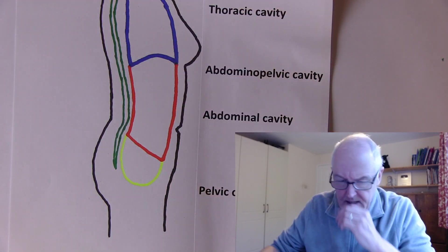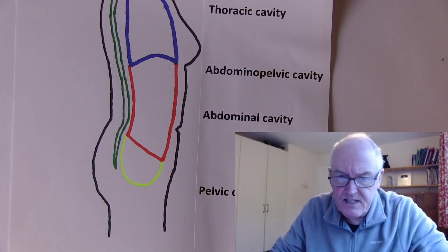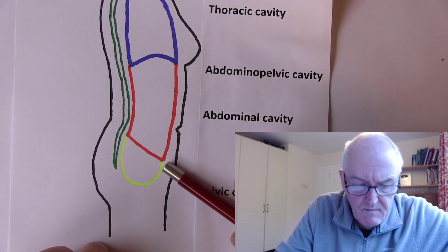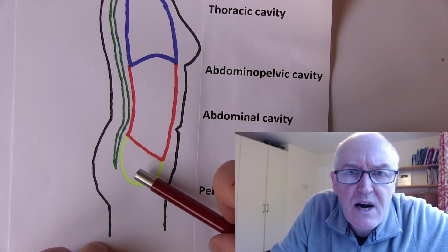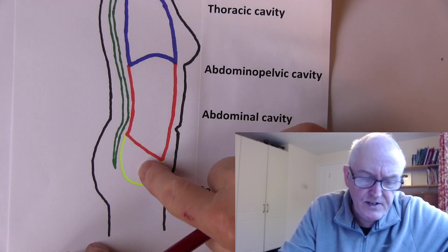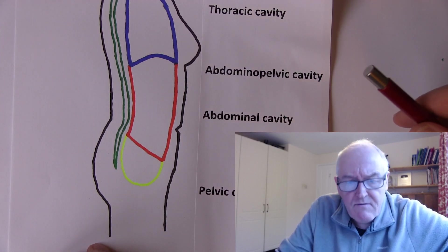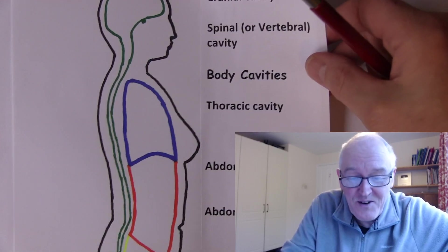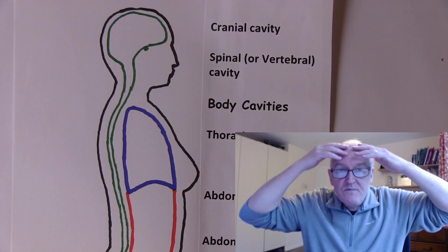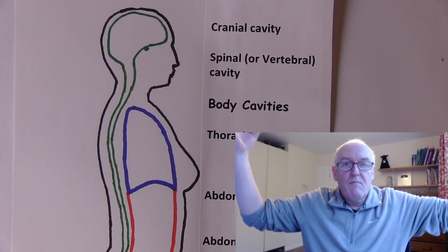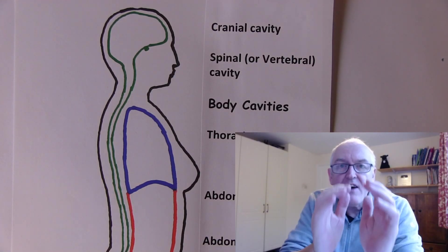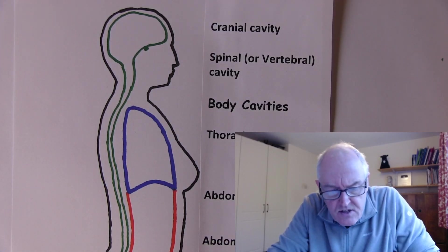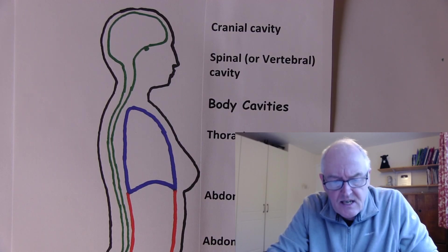The pelvic cavity contains the bladder, part of the large intestine, the anus, and mostly the reproductive organs. The pelvis is the area surrounded by the pelvic girdle — the pelvic cavity runs from about L4, the fourth lumbar vertebra, to the anterior rim. It is continuous with the abdominal cavity. In life, these cavities are filled with organs — a cavity is simply the space where the organs are located.